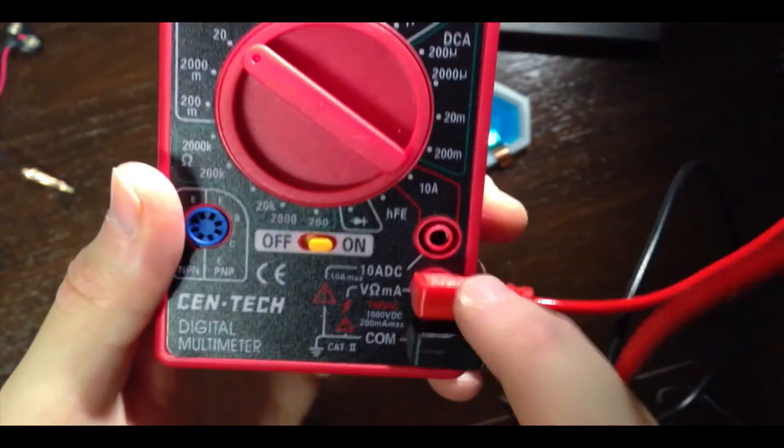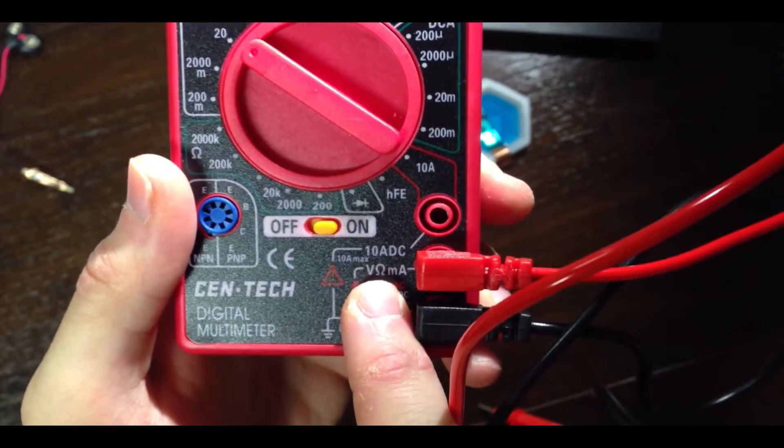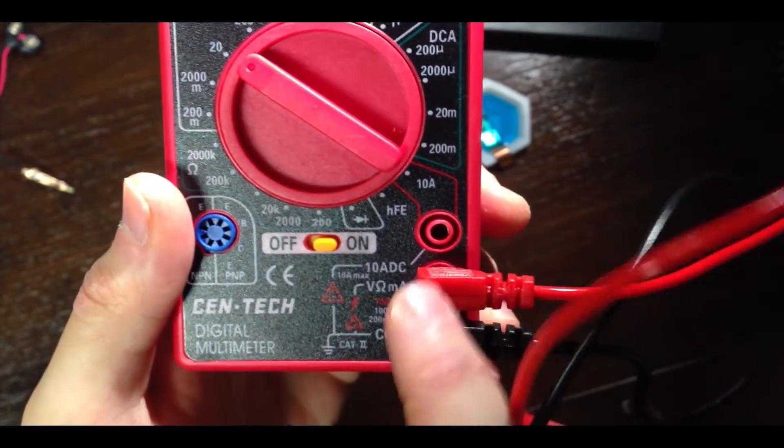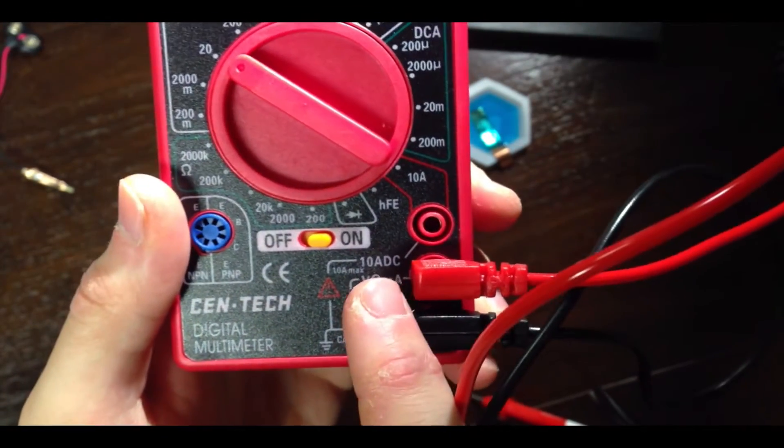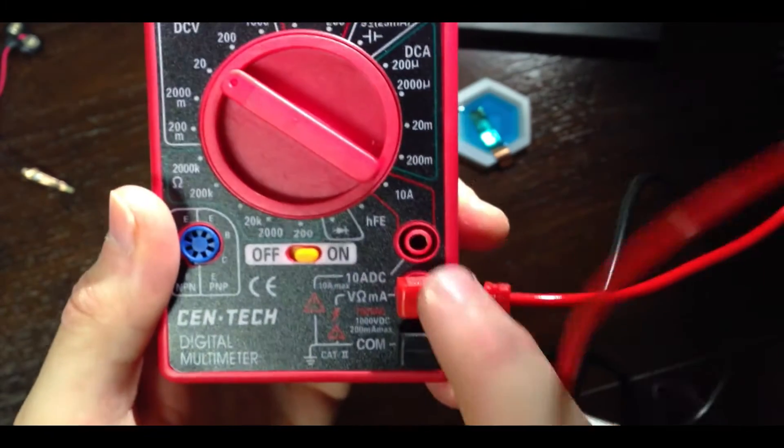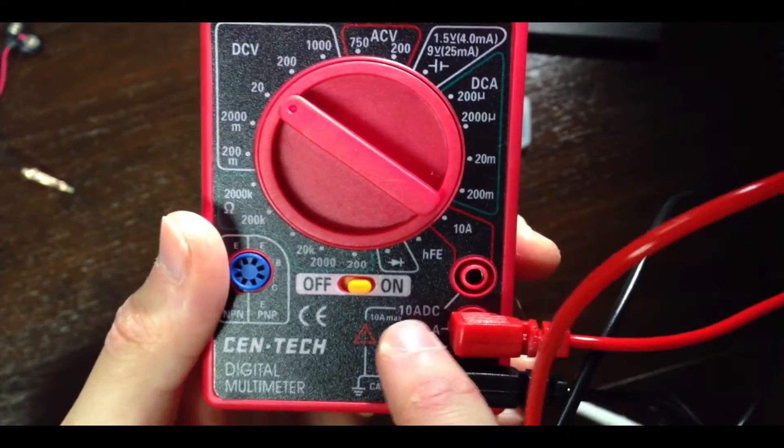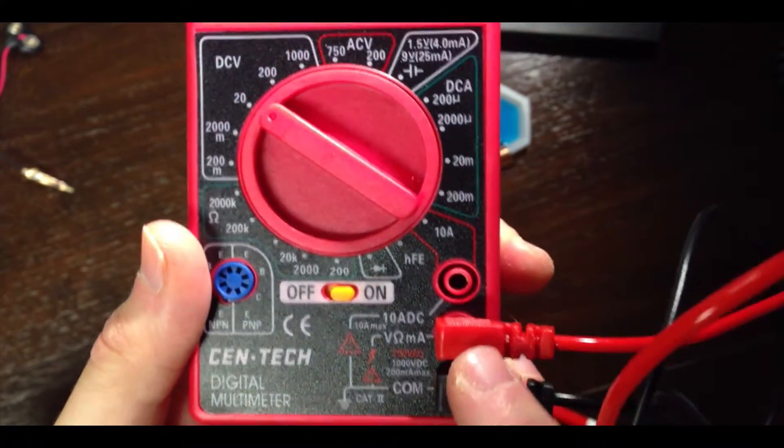We have the red lead plugged into the middle port, and here you can see that this is connected to a positive voltage, and we use this port to measure voltage. If we needed to measure as much as 10 amps of direct current or DC current, we could plug in the red lead to the top port. That won't be relevant for us here, though, so we're going to keep the red lead plugged in to the middle port so that we can measure voltage.